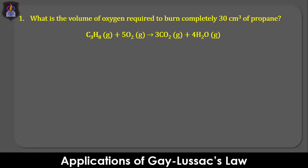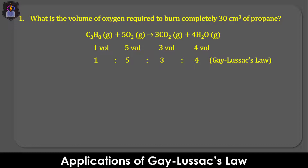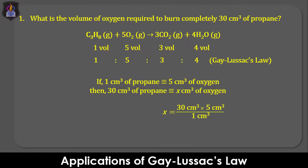From the equation of reaction, one volume of propane burns completely in five volumes of oxygen to form three volumes of carbon dioxide and four volumes of steam. In other words, if one cm³ of propane requires five cm³ of oxygen to burn completely, then 30 cm³ of propane will require 30 × 5 cm³, which gives 150 cm³ of oxygen.